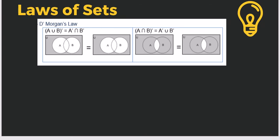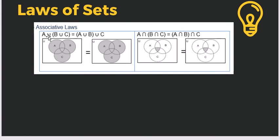We have the associative law. For three sets, A union (B union C) equals (A union B) union C — you can group them in any order and get the same result. Similarly for intersection: A intersect (B intersect C) equals (A intersect B) intersect C. This is similar to the commutative law in that the result remains the same regardless of grouping.